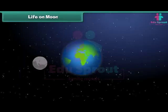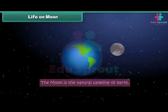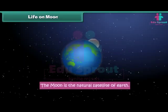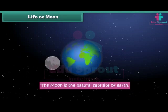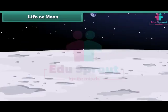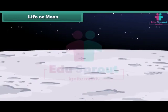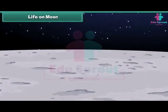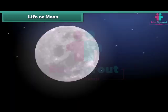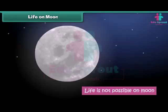Though the moon is the natural satellite of earth, it is very different from earth. There is no air, water or food on the moon. Therefore, life is not possible on it.